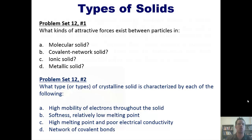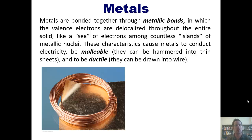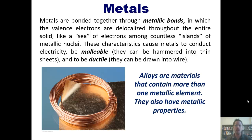I'd like to finish this video by talking more about metals. Metals are bonded together through metallic bonds in which the valence electrons are delocalized throughout the entire solid like a sea of electrons among countless islands of individual metallic nuclei. These characteristics cause metals to conduct electricity, be malleable — which means they can be hammered into thin sheets — and to be ductile, which means they can be drawn into wire. Alloys, just so you know, are materials that contain more than one metallic element.